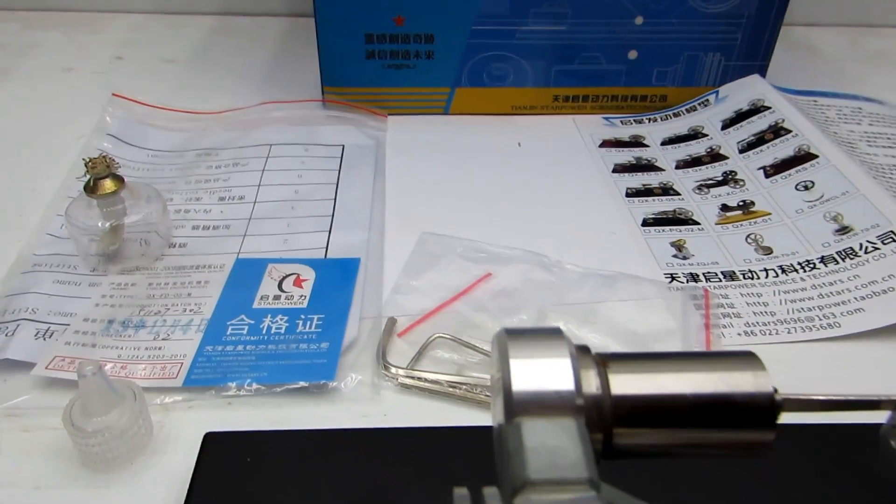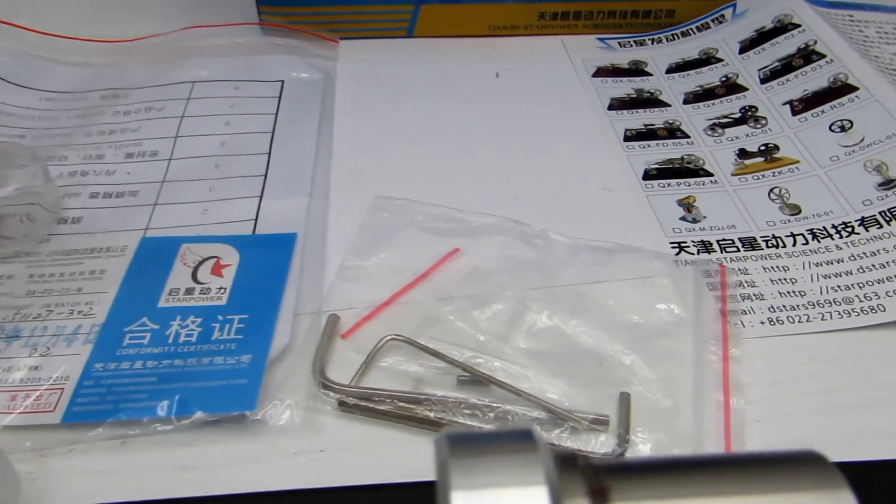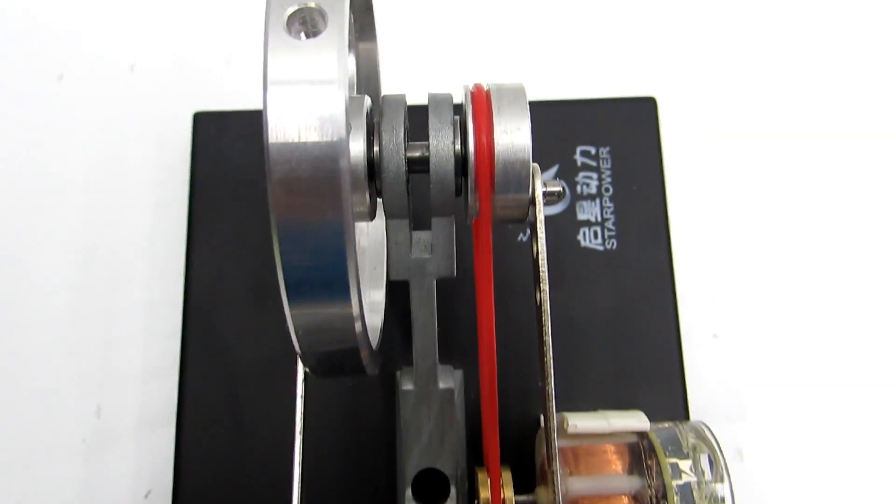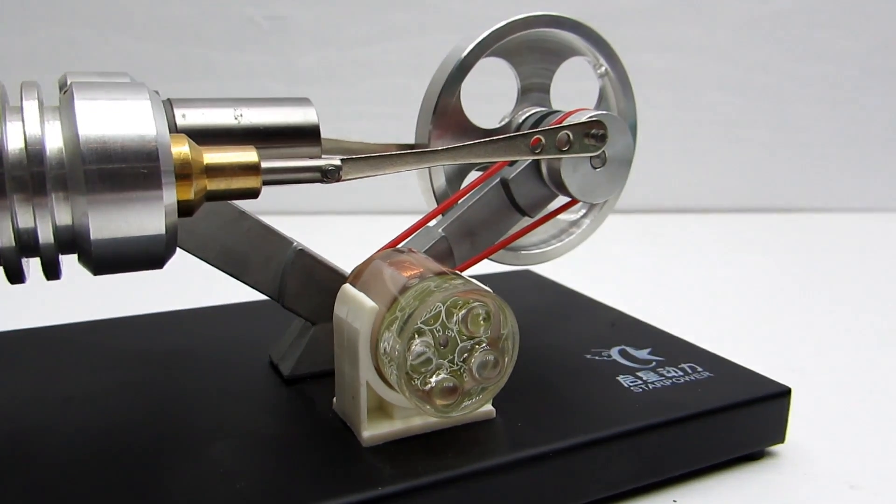We must light up the alcohol stove, wait some time and start the engine. The model is made well using iron, brass and aluminium. There is a small generator with 4 LEDs to demonstrate the work.